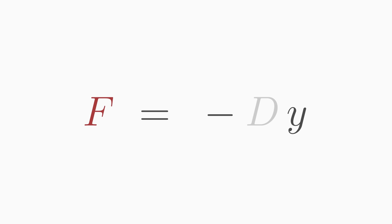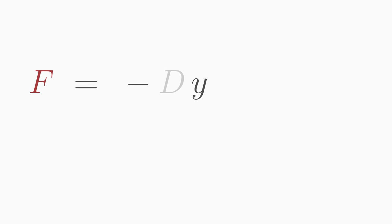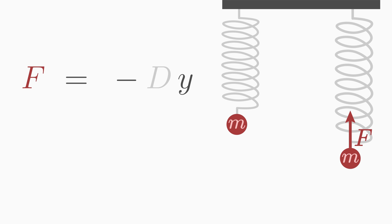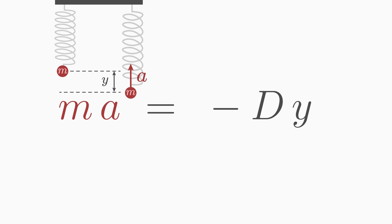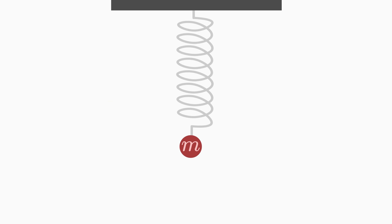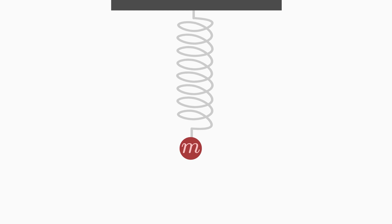Let's look at Hooke's law as a simple example. f is equal to minus d times y. This law describes the restoring force f on a mass attached to a spring. The mass experiences this force when you displace it by the distance y from the equilibrium position. d is a constant coefficient that describes how hard it is to stretch or compress the spring. The mass m of the ball attached to the spring is hidden in the force.